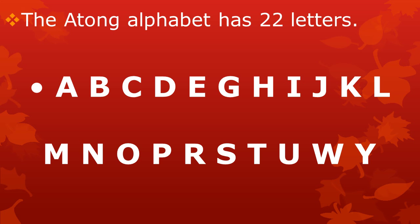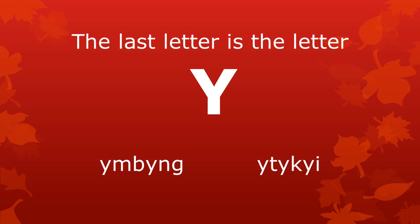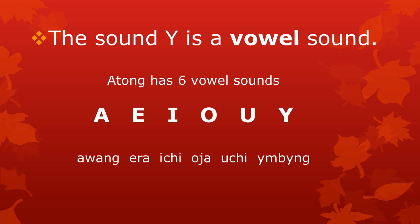As I said in my previous video, the Atong alphabet has 22 letters. The last letter is the letter Ö. The name of the letter in Atong is Ö, and it is used to write the sound Ö, as in the words Ömbeng and Ötekei. The sound Ö is a vowel sound.